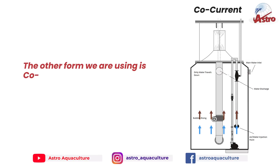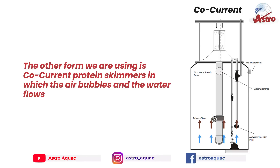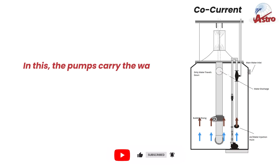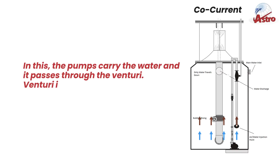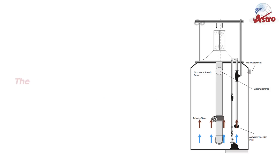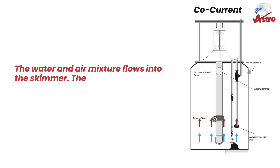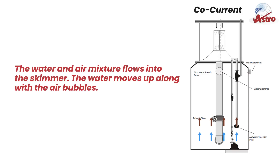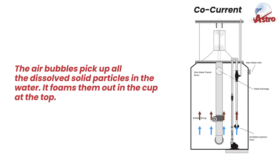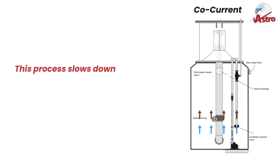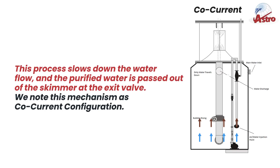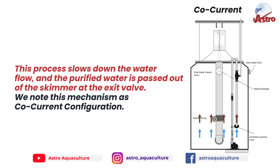In co-current protein skimmers, the air bubbles and the water flow in the same direction. Pumps carry the water and it passes through the venturi, which is a device used to collect air by sucking it from the outer atmosphere. The water and air mixture flows into the skimmer, and the water moves up along with the air bubbles. The air bubbles pick up all the dissolved solid particles in the water and foam them out in the cup at the top. This process slows down the water flow, and the purified water is passed out of the skimmer at the exit valve. This mechanism is noted as co-current configuration.